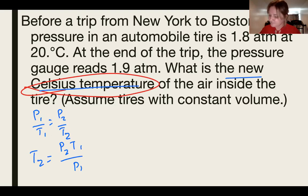So I'm basically just going to cross multiply there. So then I get T2 equals P2 T1 over P1. So that's the equation we're working with. I have to change my 20 degrees to K. So that's plus 273. That is equal to 293 K.